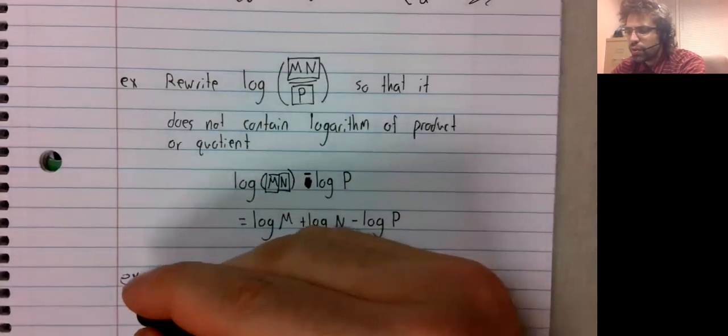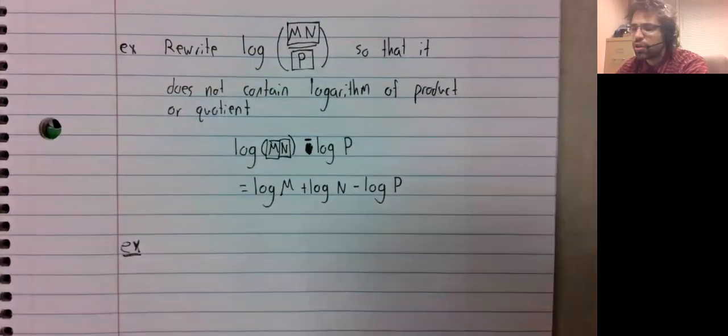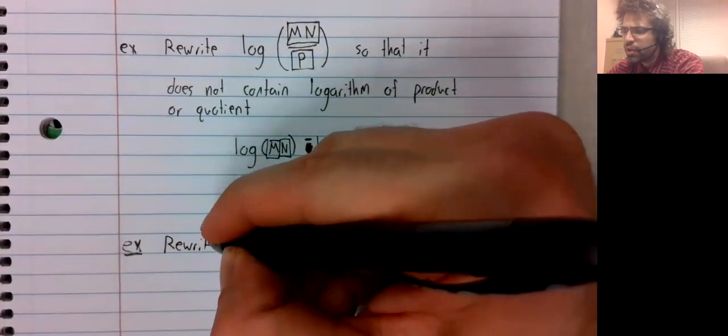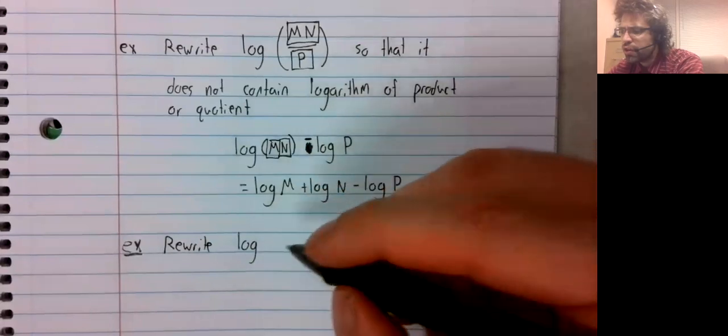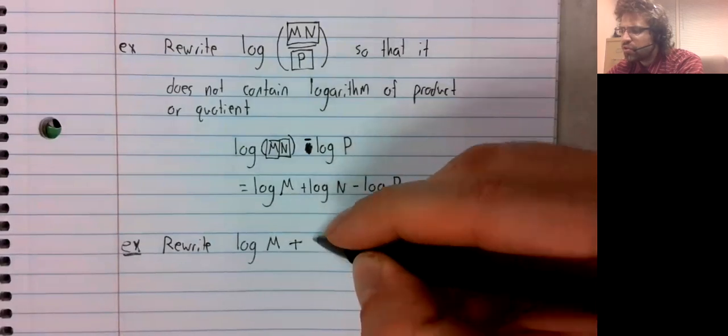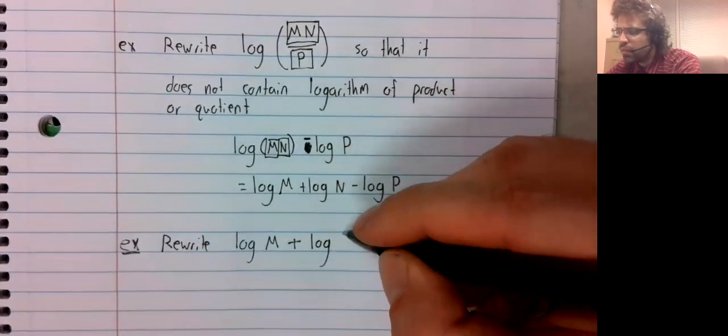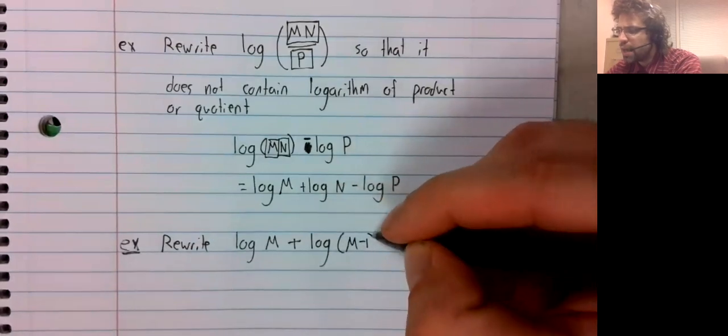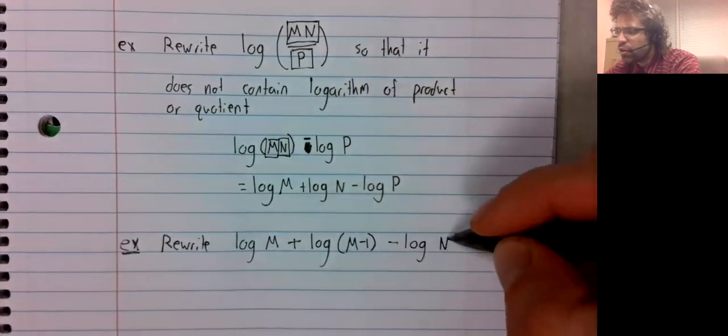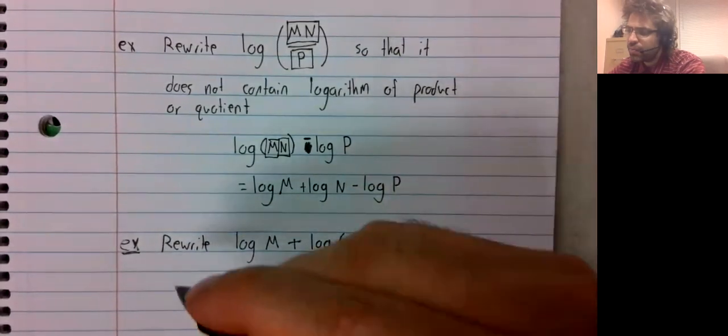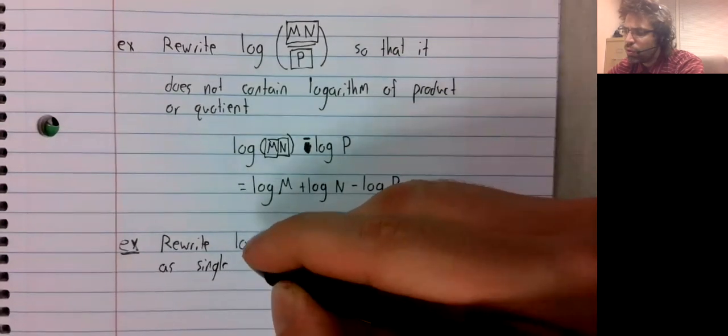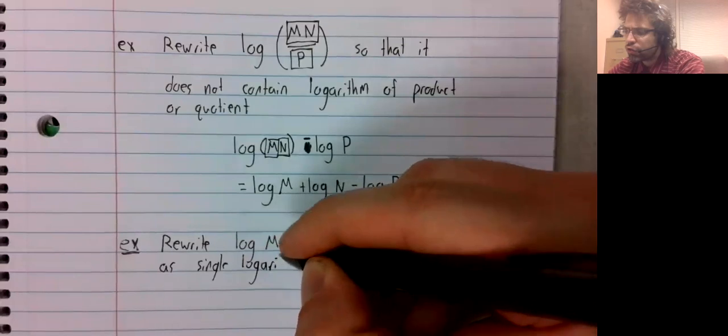It's also going to be helpful to be able to go in the other direction. Rewrite the logarithm of M plus the logarithm of M minus 1 minus the logarithm of N as a single logarithm.